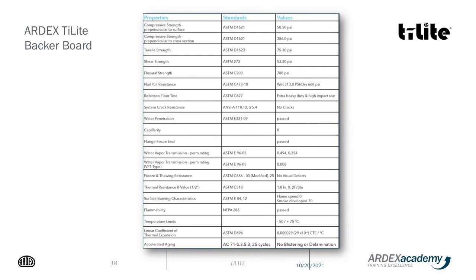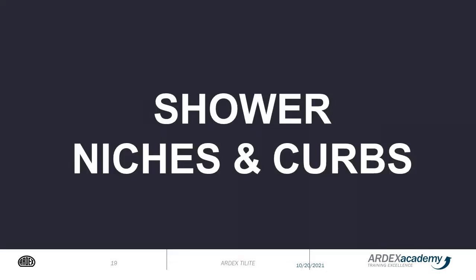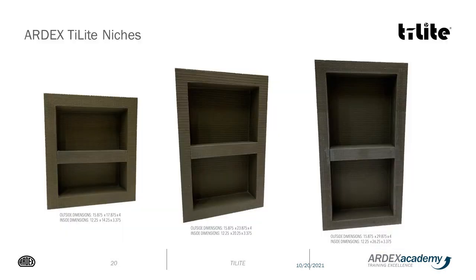The tile boards have passed numerous stringent testing protocols. The wall boards are approved for exterior vertical applications as well. ARDEX TileLite also offers shower niches and curbs. We offer three sizes of niches: 12¼ by 14¼, 12¼ by 20¼, and 12¼ by 26¼. All the niches are 3¾ inches deep, and they all come with an adjustable shelf. Super easy to install.